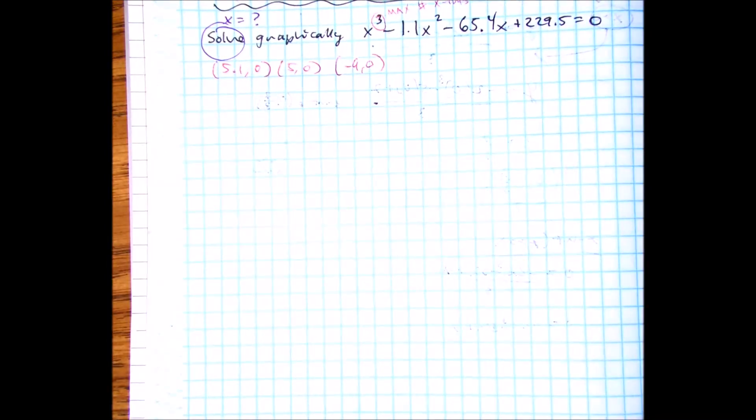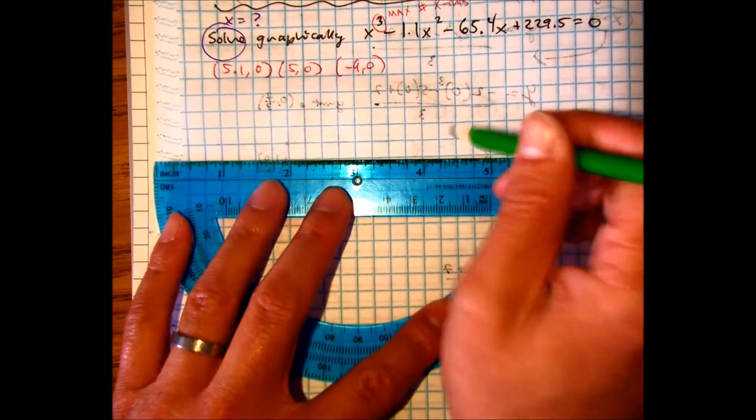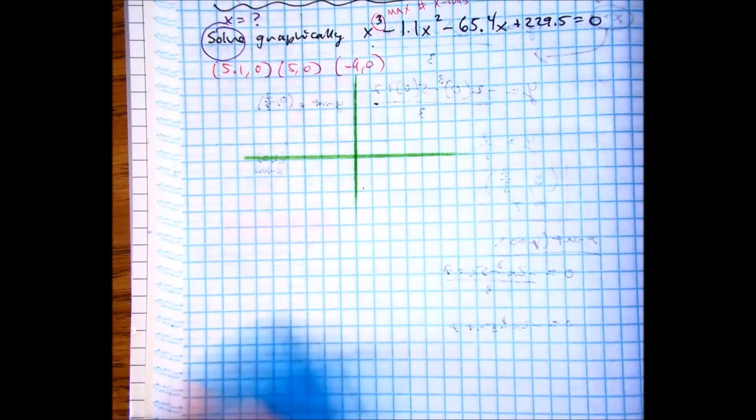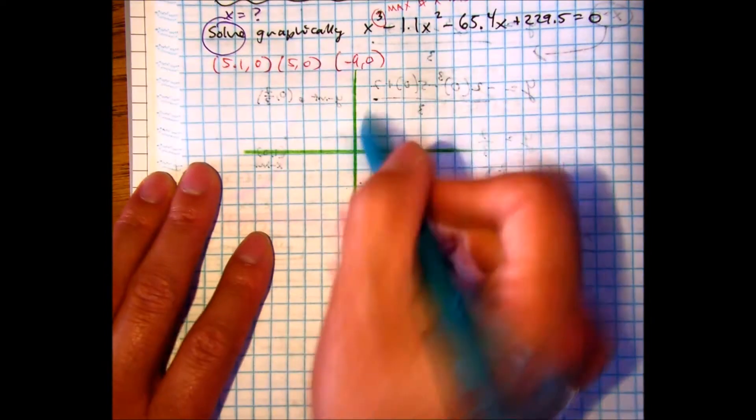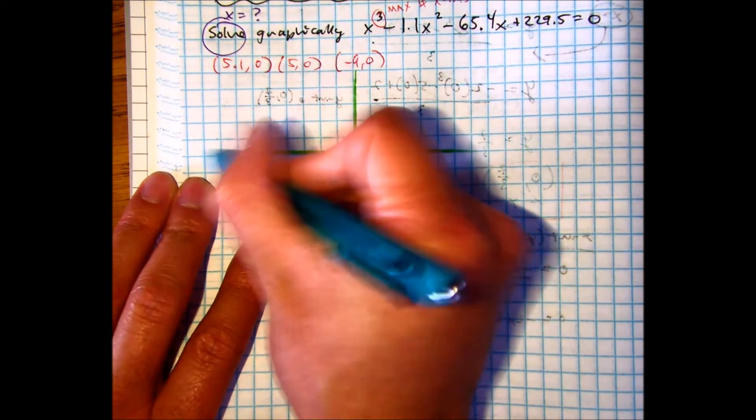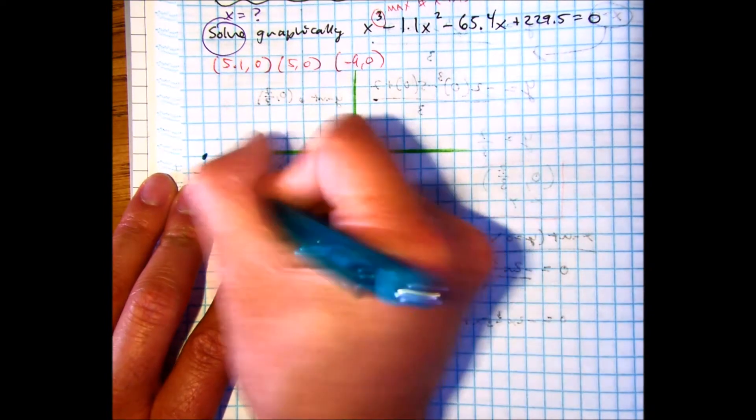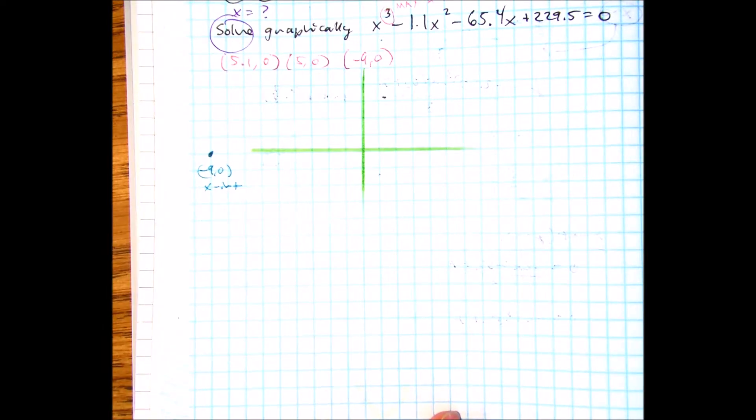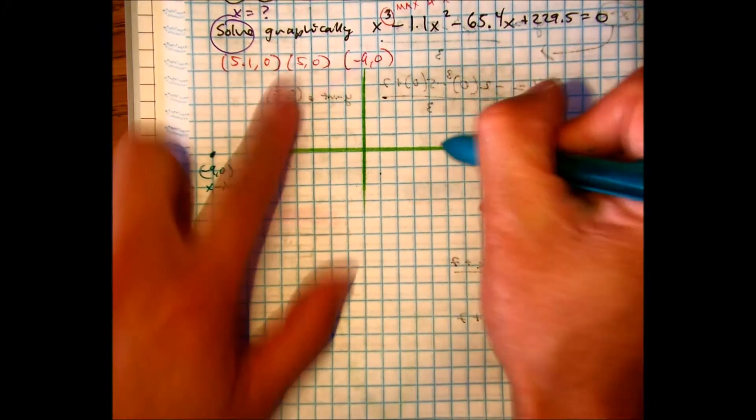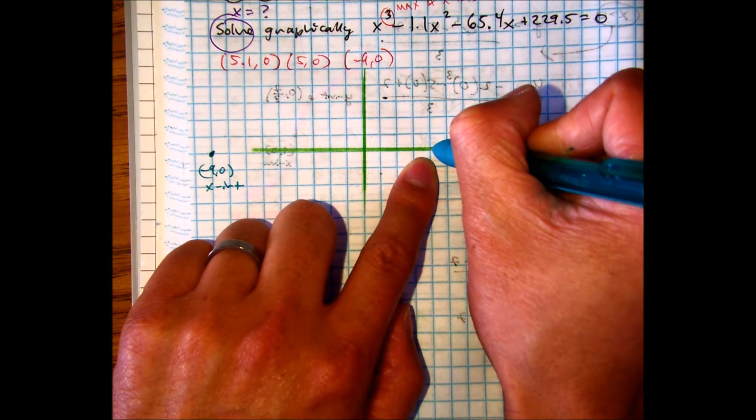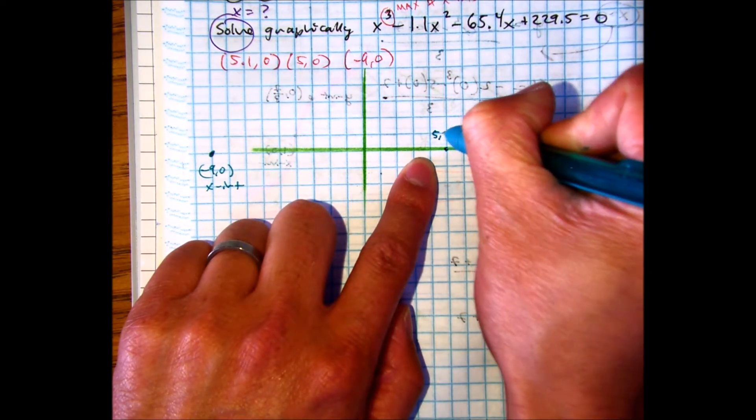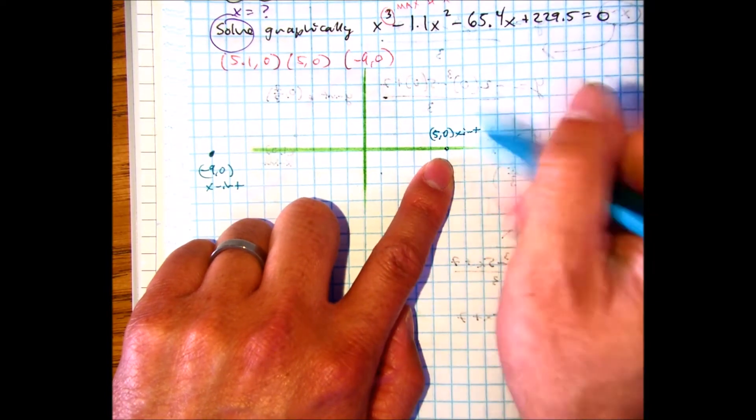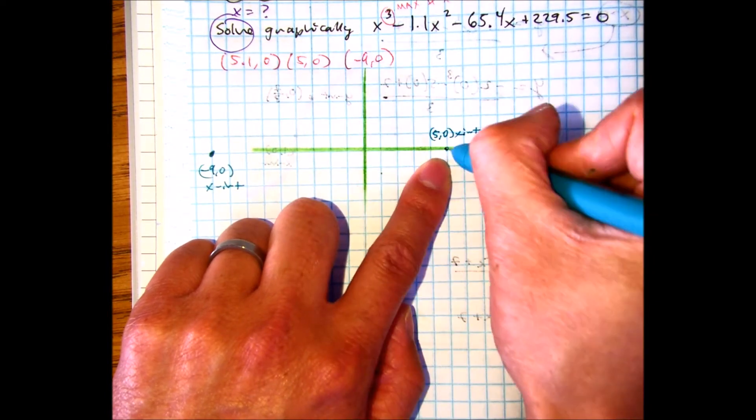And sketch. Sketch the graph. Negative 9, 0, 2, 4, 5, 6, 7, 8, 9. Labeling it, it's called an x-intercept. And it's really hard to see right, to be able to show 5.1. It's like right next to it.